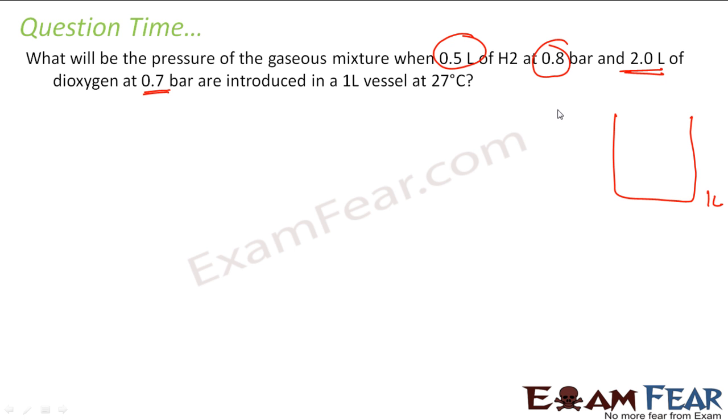I am introducing, let us suppose now 0.5 liter of hydrogen. So, if you see there is a change in volume at 0.8 bar. If there is a change in volume, there will be change in pressure. Similarly, again I will introduce 2 liter of O2 at 0.7 bar. So, the total pressure will be pressure of hydrogen plus pressure of oxygen.